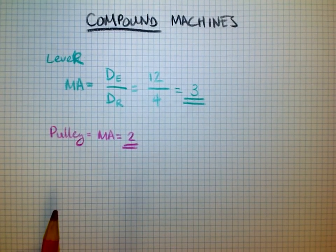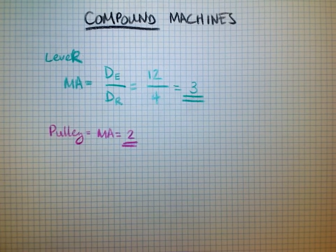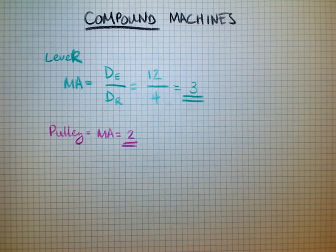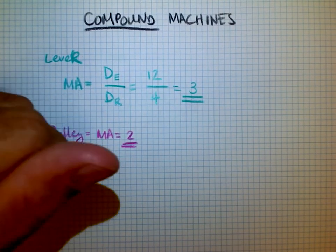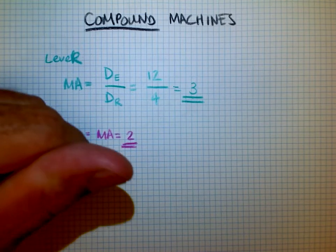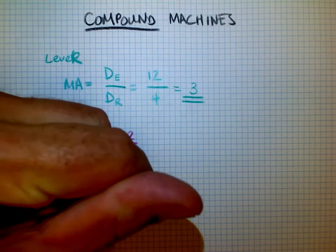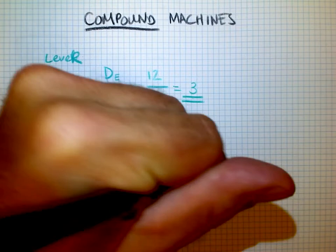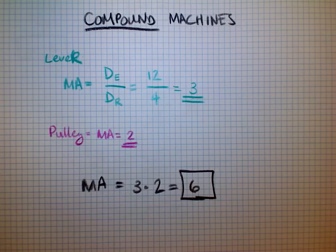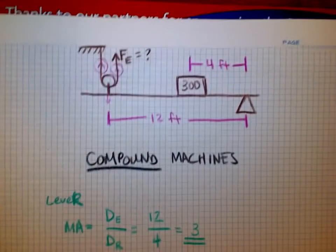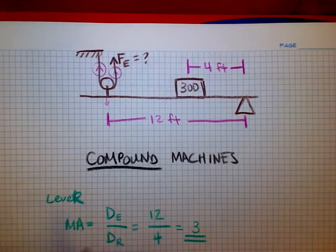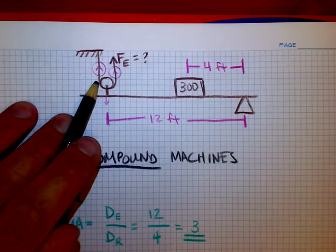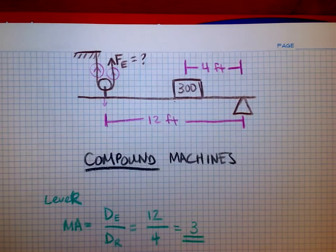For compound machines, all I have to do is take the mechanical advantage of each machine individually and multiply them. So my mechanical advantage overall of this system is 3 times 2. The mechanical advantage is 6 for this machine. Mechanical advantage of 6: three from the lever, two from the pulley, 3 times 2 is 6.